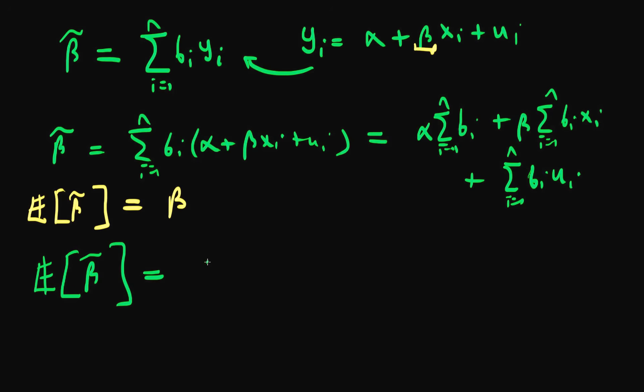Alpha times the sum of i equals 1 to n times bi. Well, that's all okay because that's just a number, so the expectation operator passes straight through that. And similarly with the second part of this equation, it's just going to be beta times the sum of i equals 1 to n of bi xi. Notice that our expectation operator is going to pass through the second term.